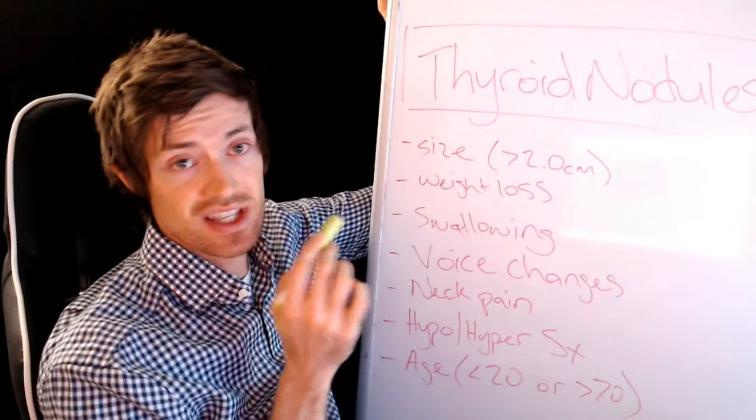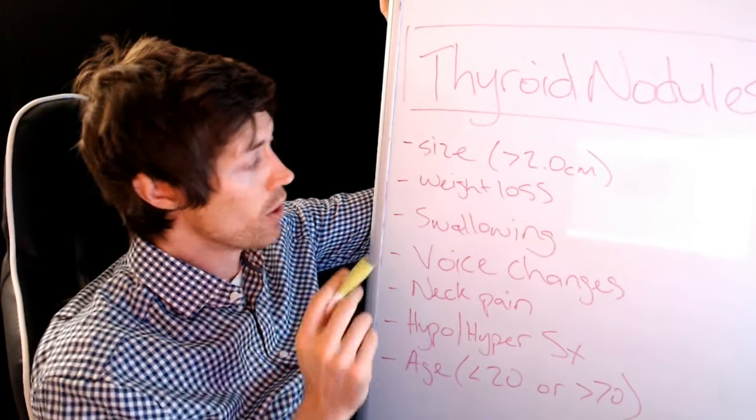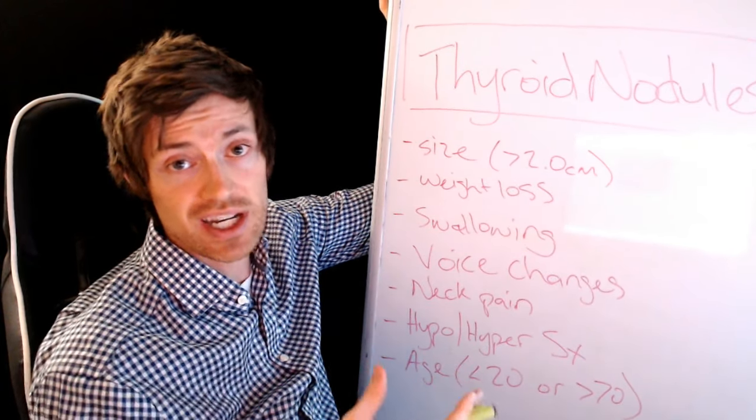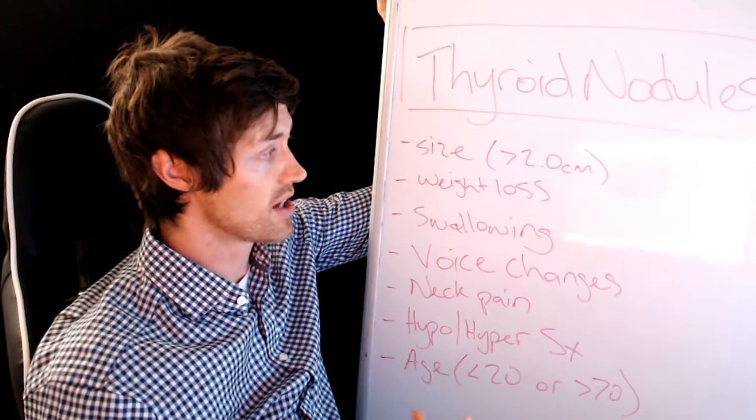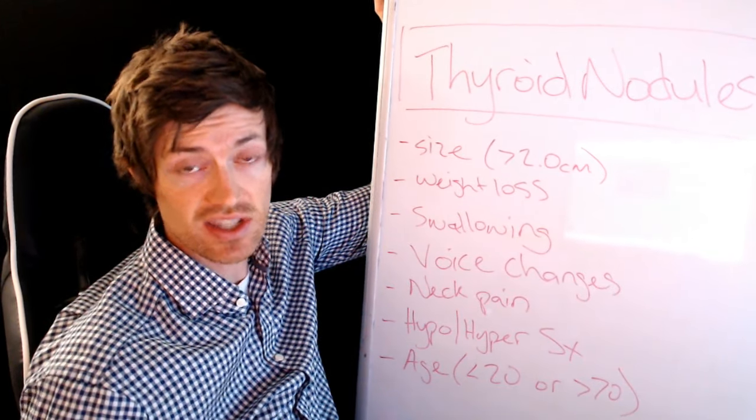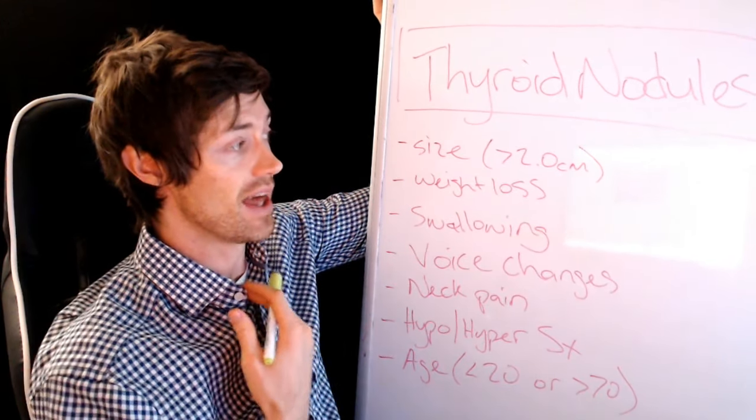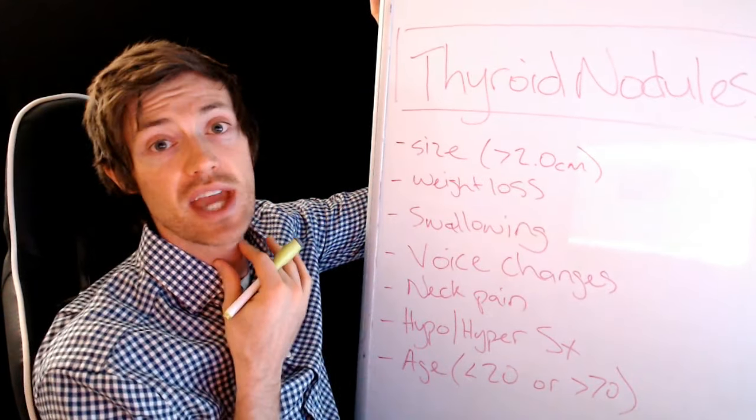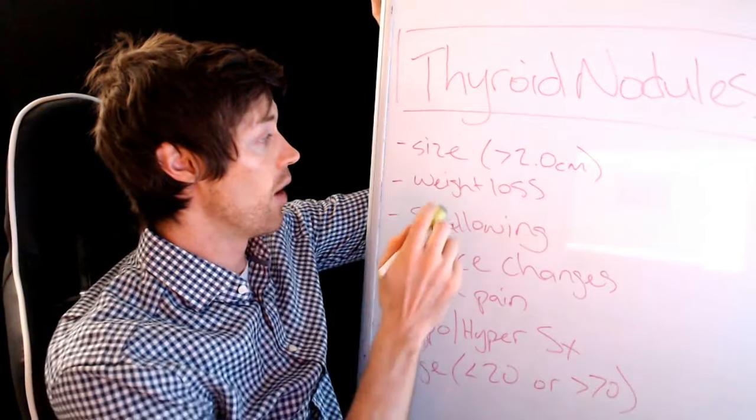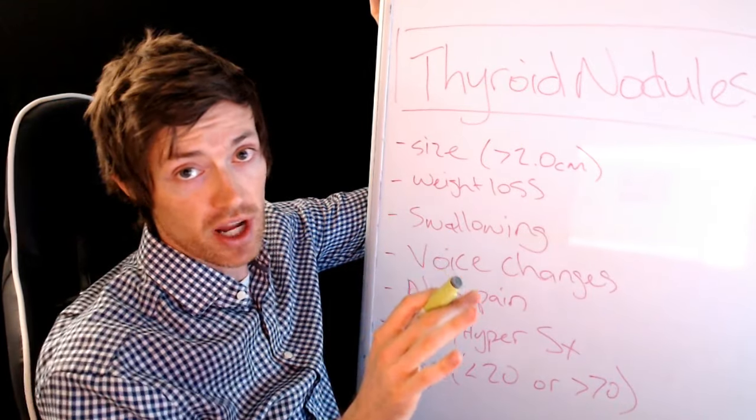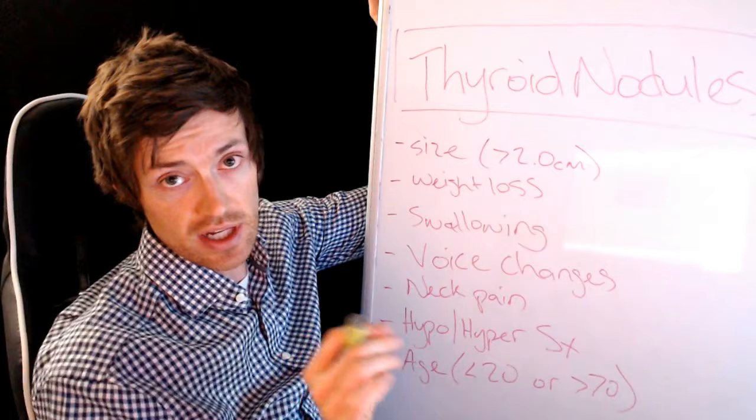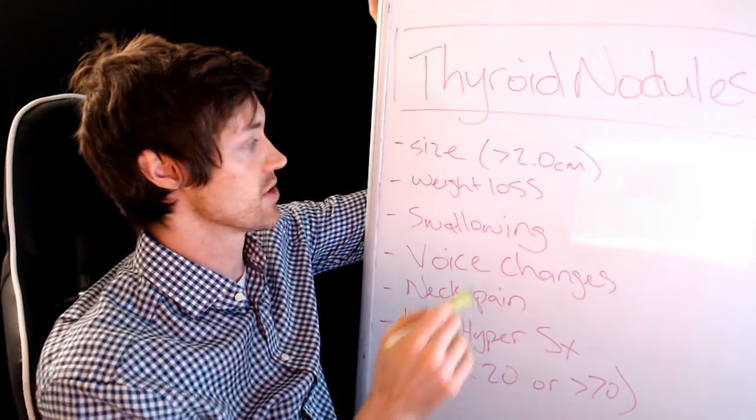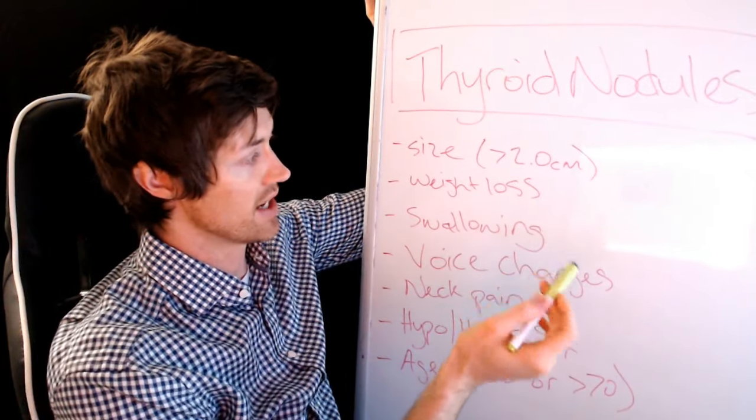Now the first thing on this list is the size of the nodule. Most nodules are incredibly small. Most nodules you don't even know that they're there and they're found in an incidental way. Often when I would diagnose it would be because we got a CT scan of somebody's chest and that would just happen to go up and we would see their thyroid gland and we'd see some small nodules. But most of the time you can't even feel them, you can't even see them. Now the smaller nodules tend to be no problem. Generally, small nodules can still be cancerous but bigger nodules have a higher risk of being cancerous. So the bigger it is, the more likely that is the case.